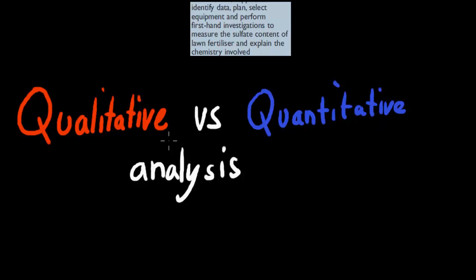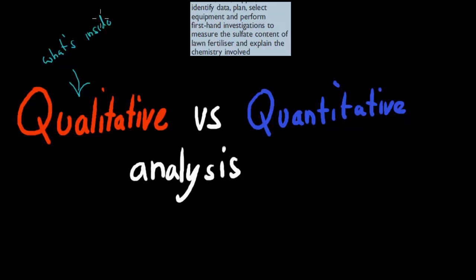If we do qualitative analysis, what that means is we're basically trying to figure out what's inside — what kind of ions are inside. Whereas quantitative analysis talks about how much of it is inside. So quantitative, as in quantity, is how much is inside, whereas qualitative is what actually is inside.